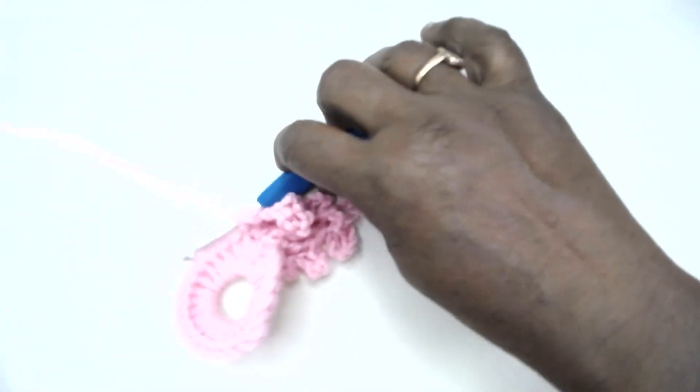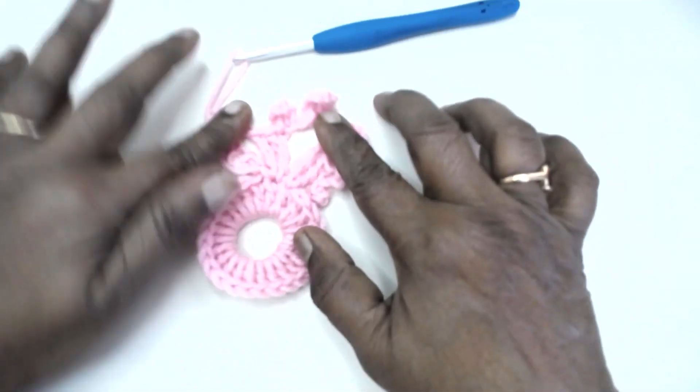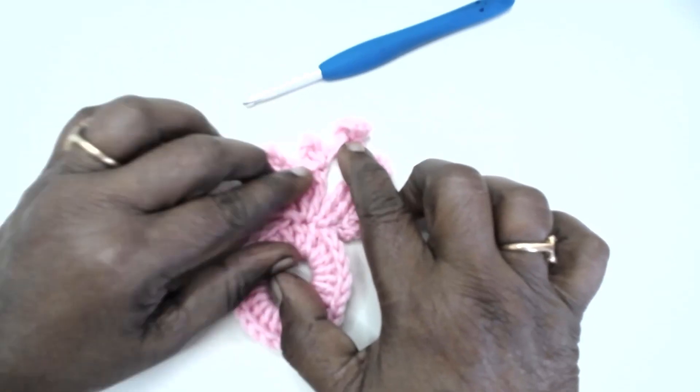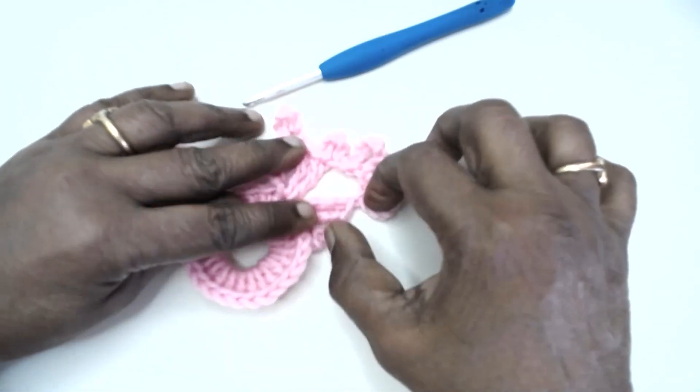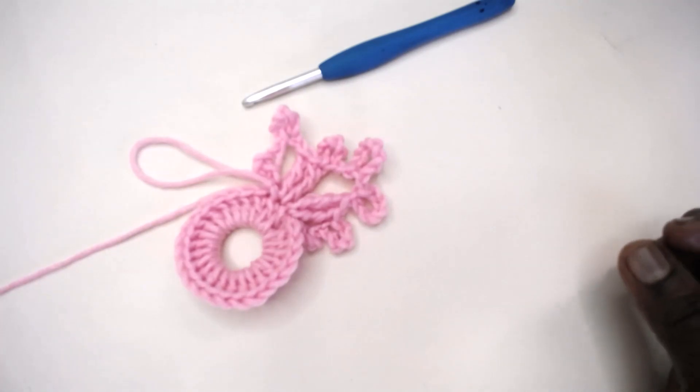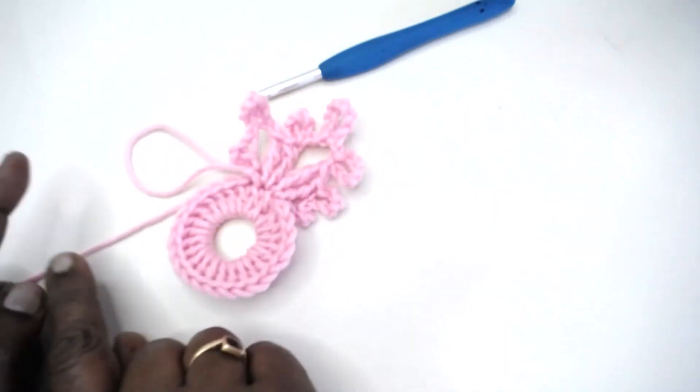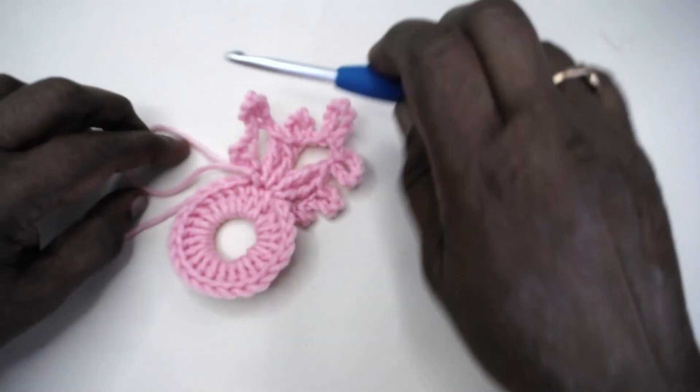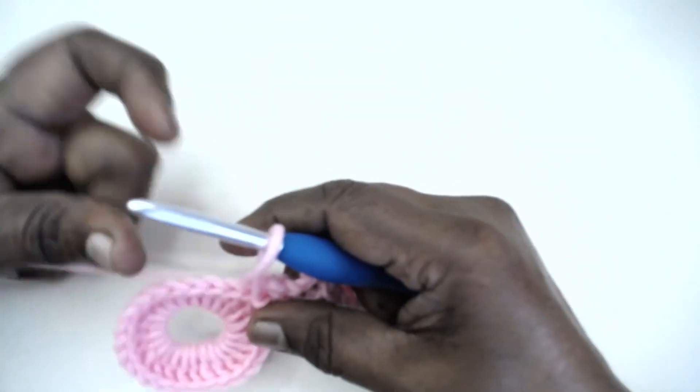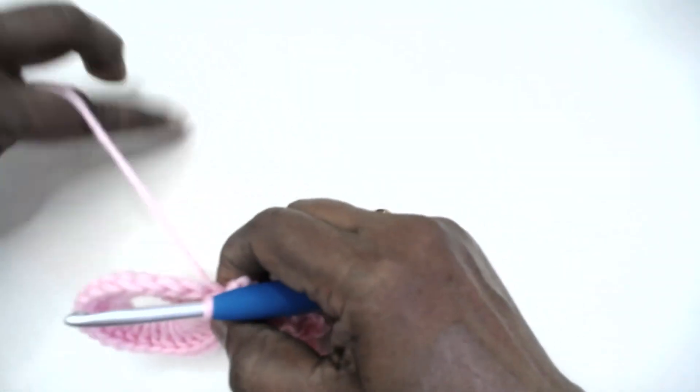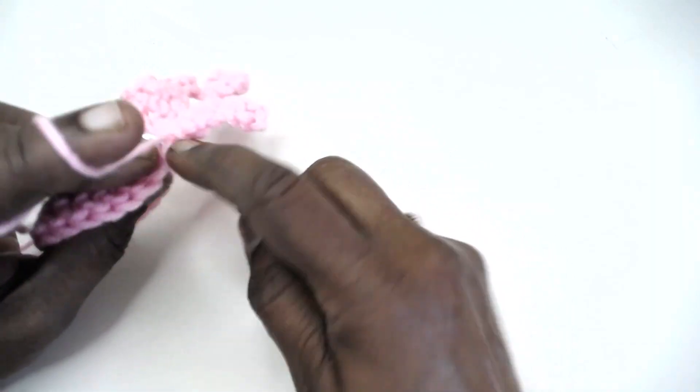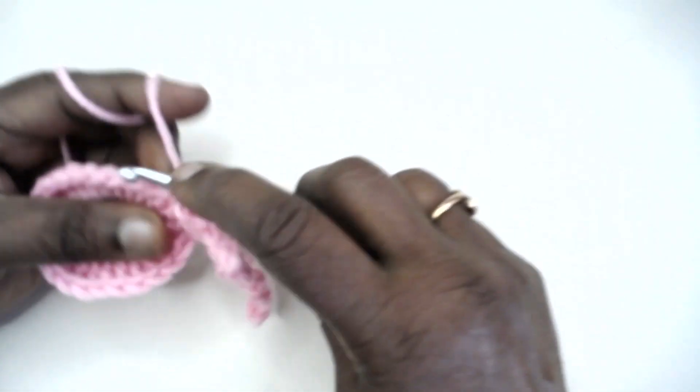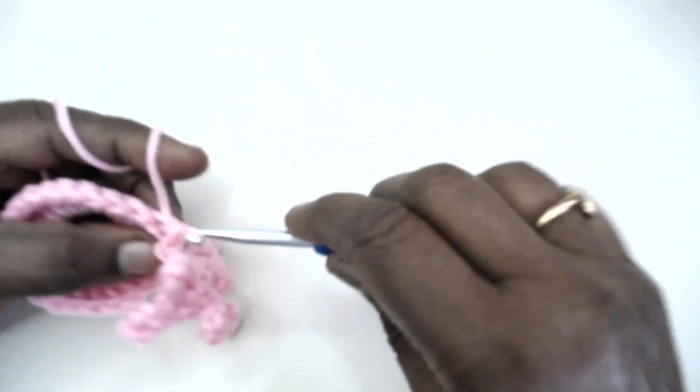This is how each of your floral flake will look like. To go to and make the next floral flake, slip stitch into each of the next three doubles - one, two, and three. Again work this floral flake over these two stitches.